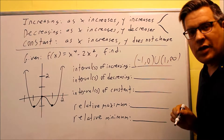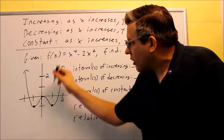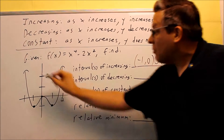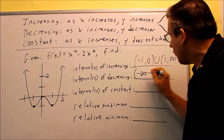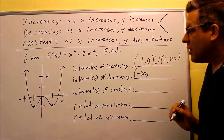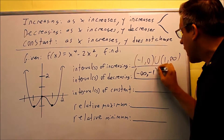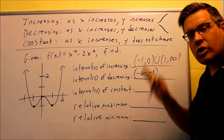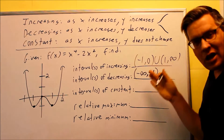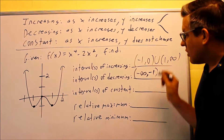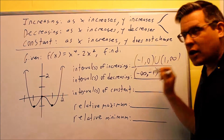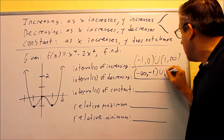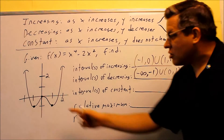For decreasing, we're looking for parts of the graph going downhill as you move from left to right. There's one section, and because of the arrowhead on the end, we use negative infinity. So the first interval is from negative infinity to negative 1. We're only using x values for these intervals, not y values. There's also another section between 0 and 1 where the graph is decreasing.